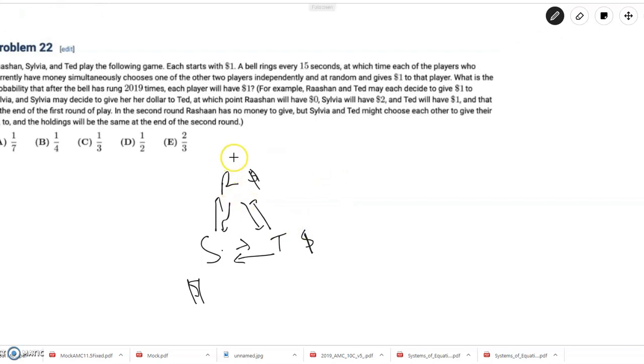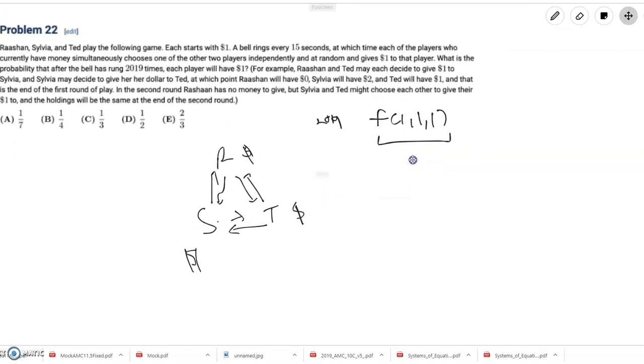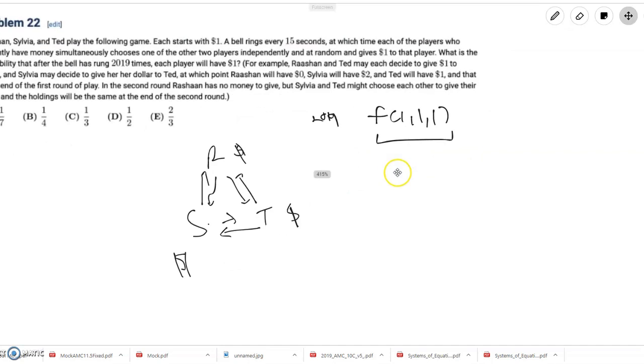So right off the bat, we see that we want the probability that after 2019 turns, we have F of 1, 1, 1. And just F stores the amount of money each player has. So we can see that basically up to symmetry, there are only like three states.